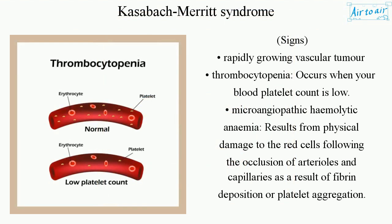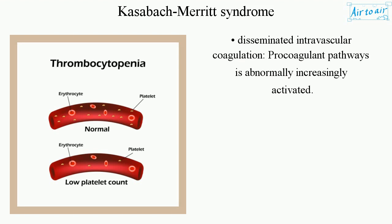Signs include a rapidly growing vascular tumor. Thrombocytopenia occurs when your blood platelet count is low. Microangiopathic hemolytic anemia results from physical damage to the red cells following occlusion of arterioles and capillaries as a result of fibrin deposition or platelet aggregation. Disseminated intravascular coagulation occurs when procoagulant pathways are abnormally and increasingly activated.